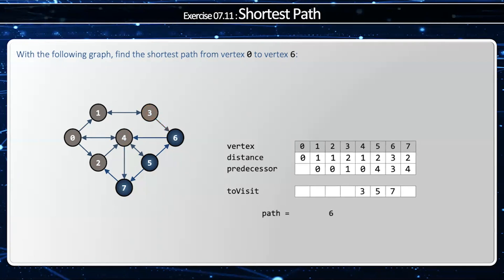The path is going to start with six, because that's my sink. Six's predecessor is three, so I'm going to add three onto my list. Three's predecessor is one, so I add one. And one's predecessor is zero, which happens to be my source. Therefore, my shortest path is zero, one, three, and six.